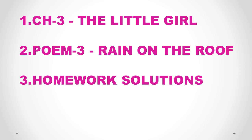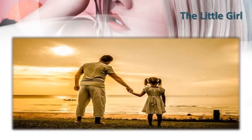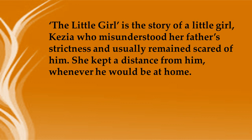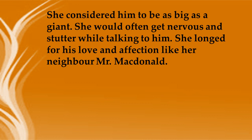First we will look at the homework solutions of chapter number 3 of Moments, 'Ishwaran the Storyteller.' Then we look at the summary of chapter number 3 of Beehive, 'The Little Girl.' This is the story of a little girl, Kezia, who misunderstood her father's strictness and usually remained scared of him, keeping a distance whenever he would be at home. Kezia initially remained horrified at her father's appearance as he was very strict and she considered him to be as big as a giant.